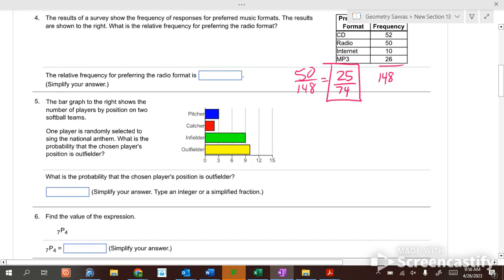Somebody has to sing the national anthem so you randomly select them. What's the probability of choosing an outfielder? How many pitchers do you have? Three pitchers. How many catchers? Two catchers. How many infielders? Nine. How many outfielders? Ten. So nineteen and two is twenty-one and three is twenty-four, right? Twenty-four total players.